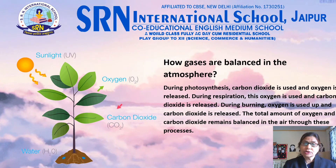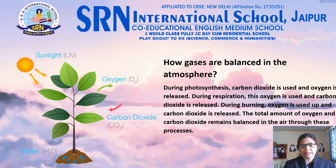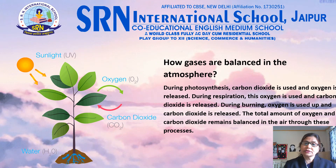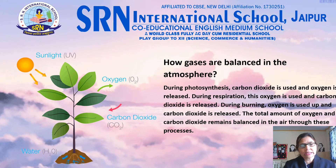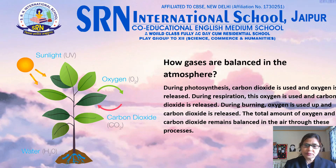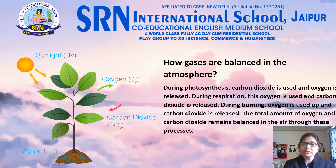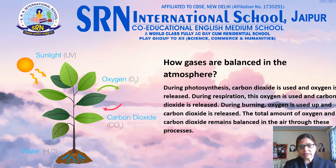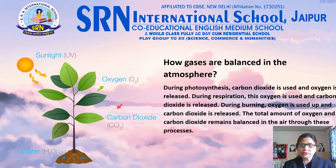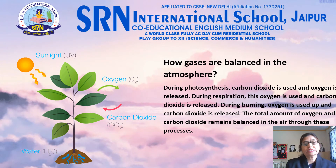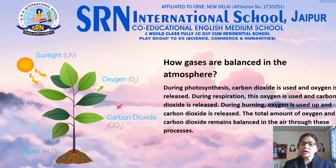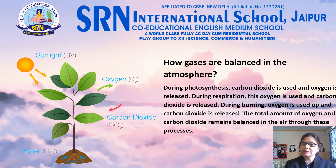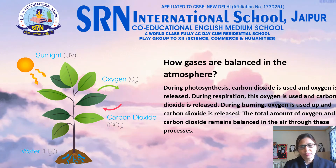Do you know how gases are balanced in the atmosphere? During photosynthesis, carbon dioxide is used and oxygen is released. During respiration, this oxygen is used and carbon dioxide is released. During burning, oxygen is used up and carbon dioxide is released. The total amounts of oxygen and carbon dioxide remain balanced in the air through these processes.